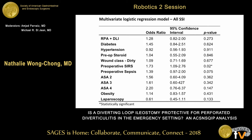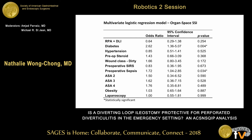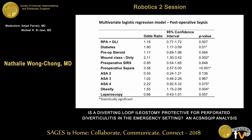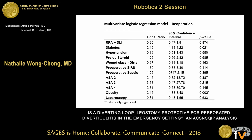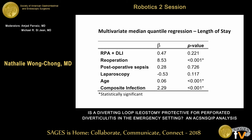We then performed a multivariable regression analysis after controlling for known confounders. We found that adding a diverting loop ileostomy did not affect the total SSI rate, and it was not predictive of developing organ space SSI. It was also not predictive of postoperative sepsis or re-operation, and was not a predictor of length of stay.